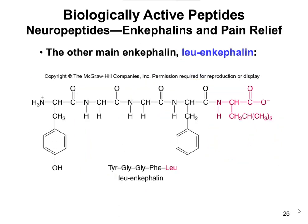Leu-enkephalin is really the same thing. You have that same backbone with tyrosine, glycine, glycine, phenylalanine. The only difference is that instead of methionine at the C-terminus, now you have a leucine. You don't really need to know the specific difference between them — I'm just using this as an example to show you some naturally occurring peptides.